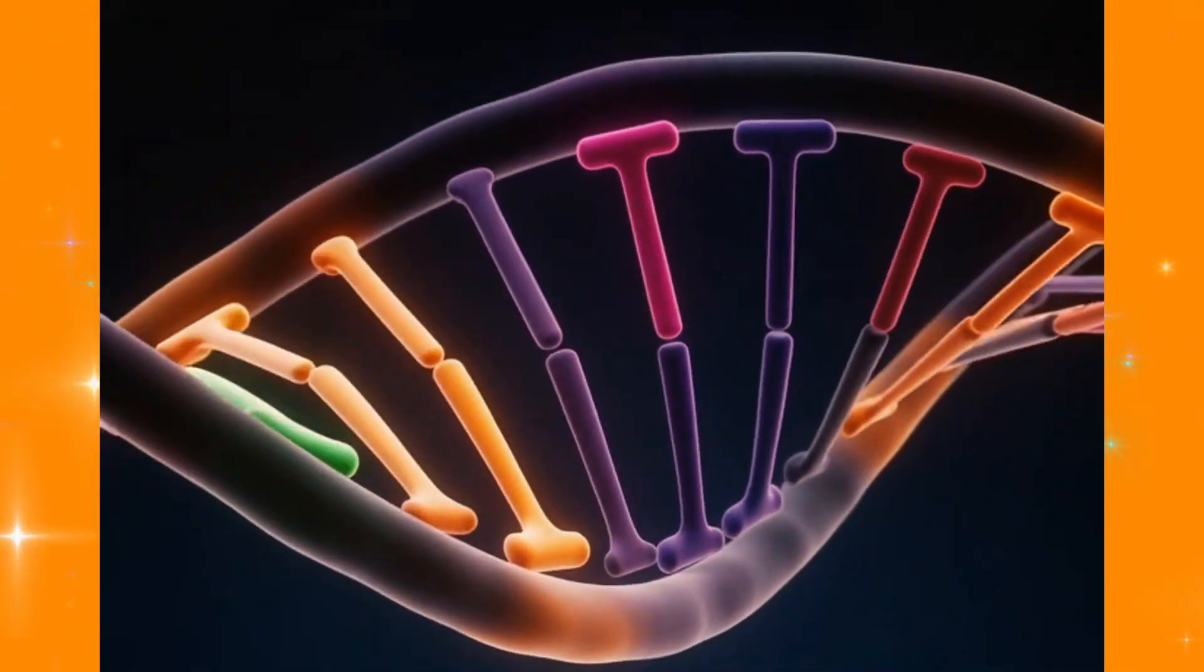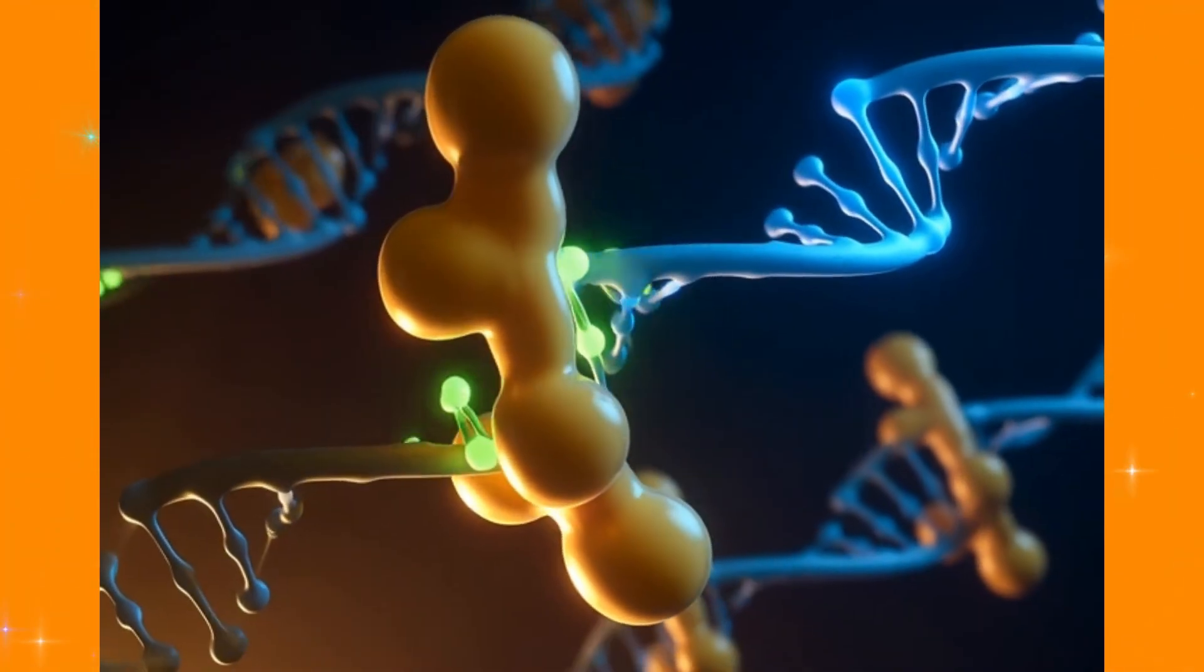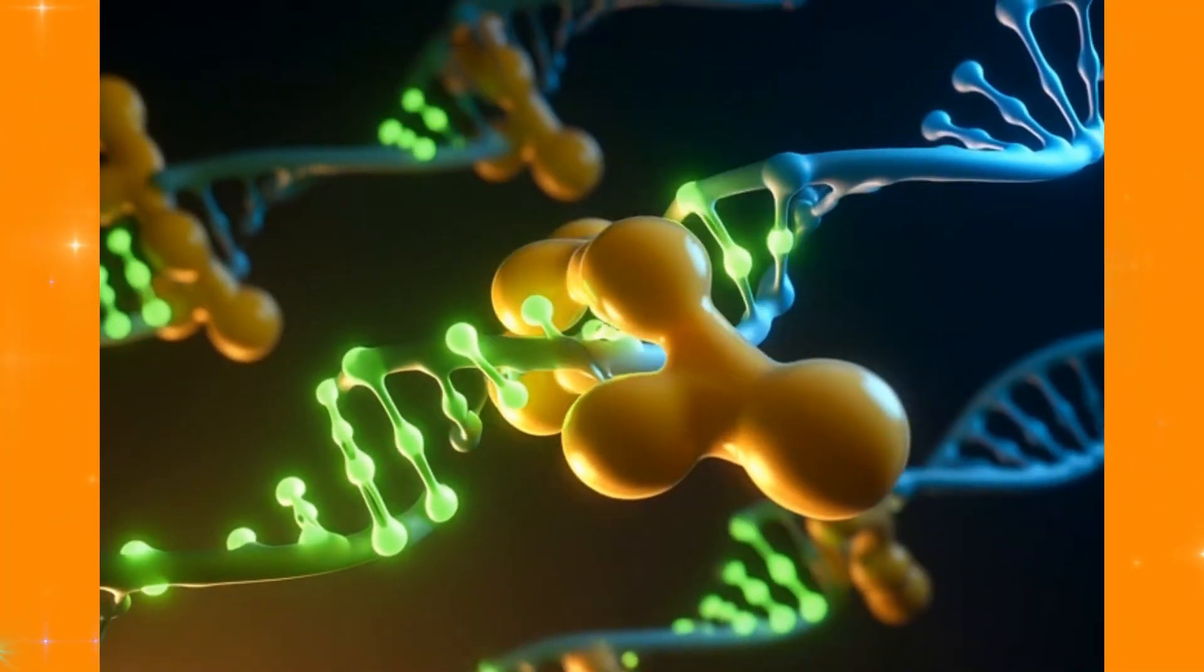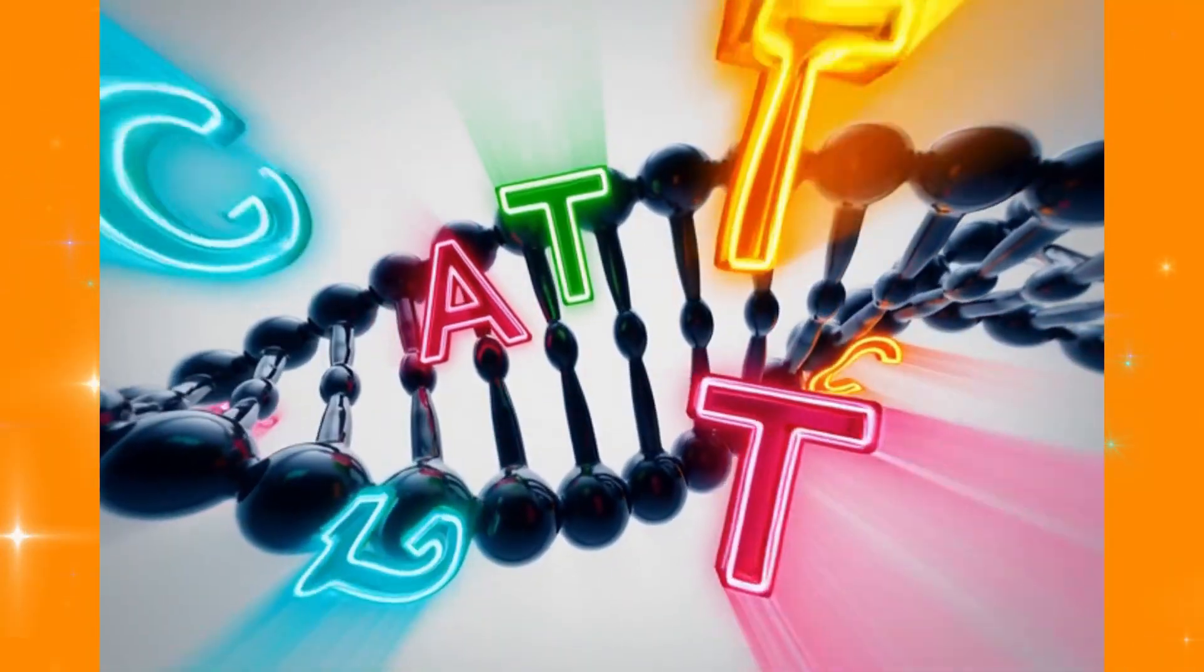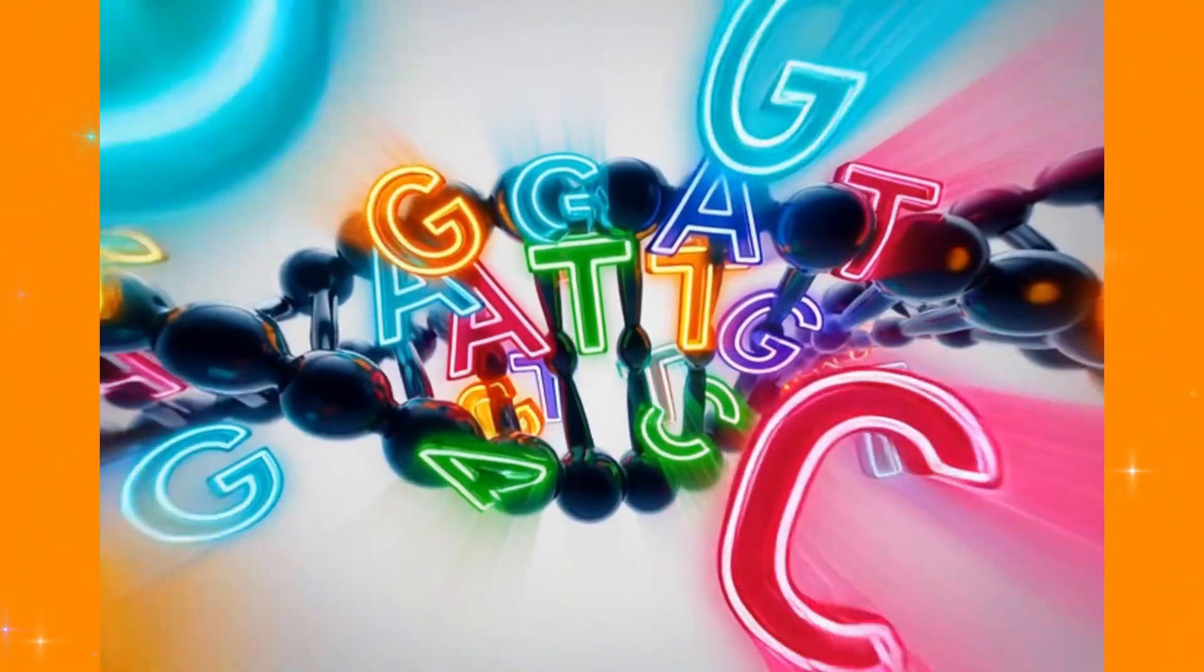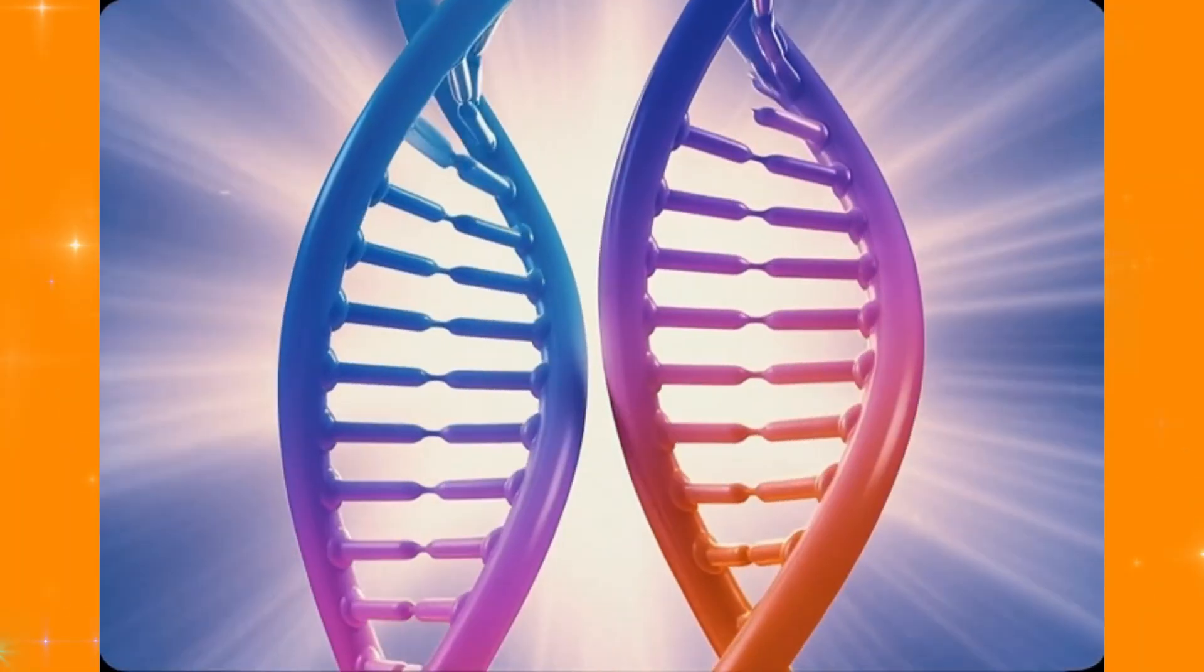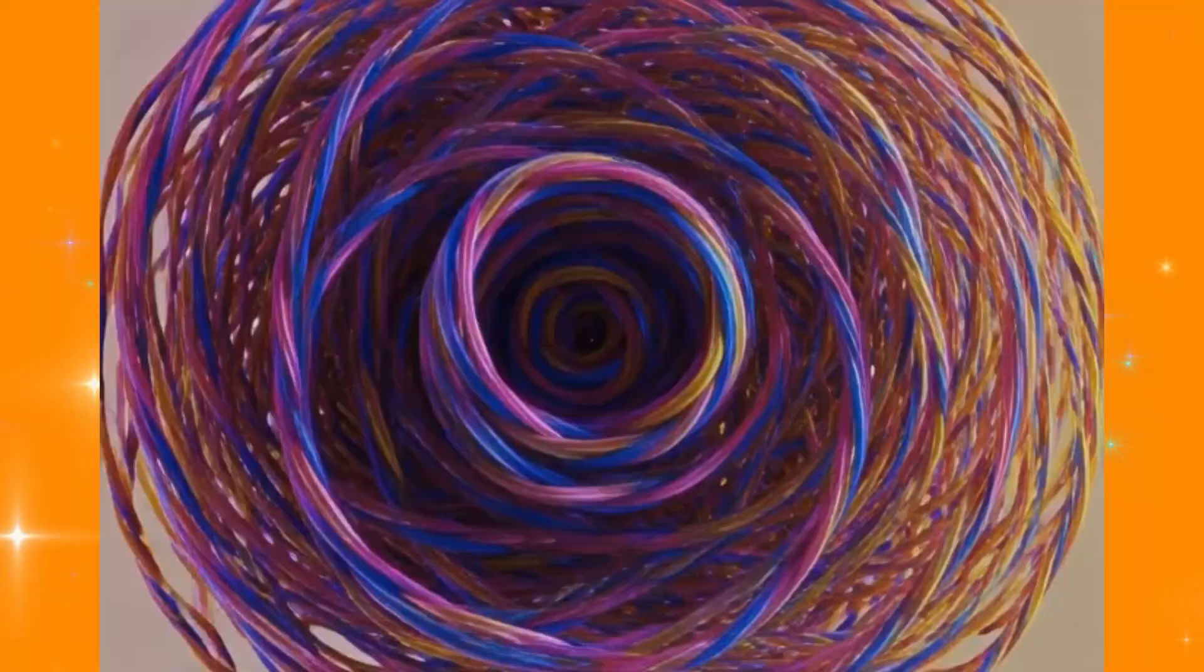Here's what actually happens. Your cell starts by doing something wild. It copies its entire instruction manual, 3 billion letters of DNA, without missing a single word. Imagine photocopying an encyclopedia and getting every letter perfect. That's what your cells do billions of times a day.